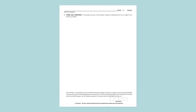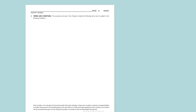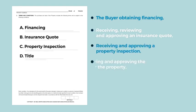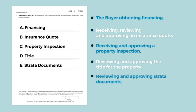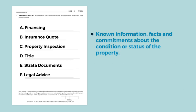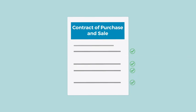Terms and Conditions: Most transactions have unique terms and conditions that must be documented. Some conditions will provide that they are for the benefit of one party and may need to be satisfied or waived in order for the transaction to complete. Examples include the buyer obtaining financing, reviewing and approving an insurance quote, a property inspection, reviewing and approving the title for the property, reviewing strata documents if applicable, and obtaining legal and/or professional advice. This section may also include known information, facts, and commitments about the condition or status of the property. Terms not included in the contract will likely not be binding on the parties.